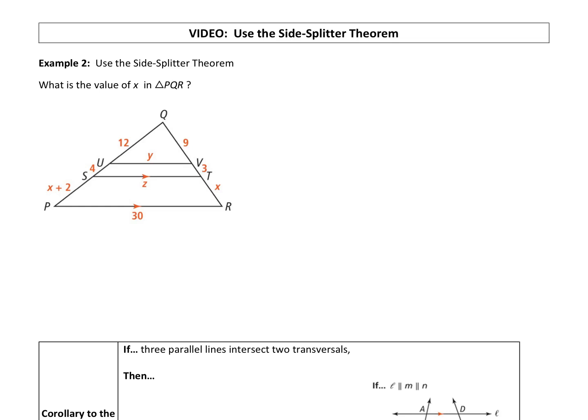Okay, so we just learned about the side splitter theorem in the last example. So now let's actually use it. We can apply it. So in this example, what is the value of x in triangle PQR?